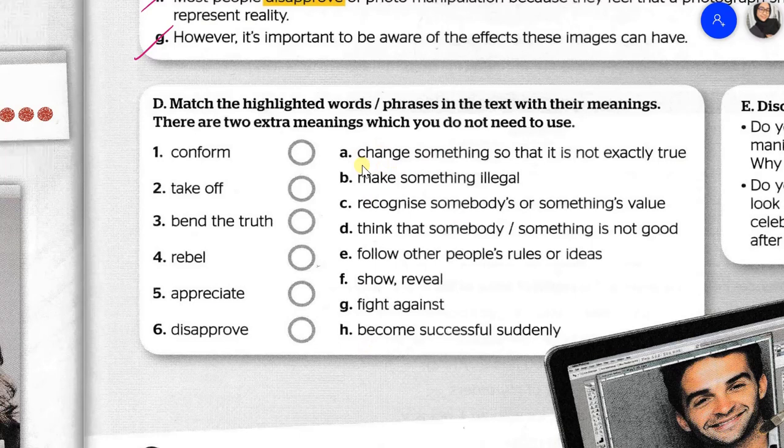These are the meanings. A: Change something so that it is not exactly true. B: Make something illegal. C: Recognize somebody's or something's value. D: Think that somebody or something is not good. E: Follow other people's rules or ideas. F: Show, reveal. G: Fight against. H: Become successful suddenly.